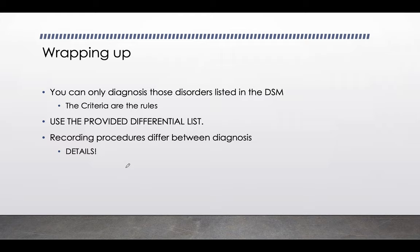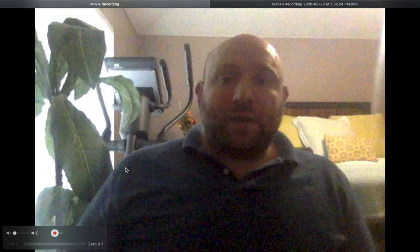To wrap up: you can only diagnose disorders in the DSM — don't make one up. The criteria are the rules. Use the differential list — when you have a client or case study, write down everything you think it could be, highlight the details, then go through the DSM and start ruling out other diagnoses. Recording procedures differ between diagnoses with different specifiers, and similar specifiers may have different definitions and rules. Take your time and really explore those details. I hope this was helpful. If you have questions, let me know.